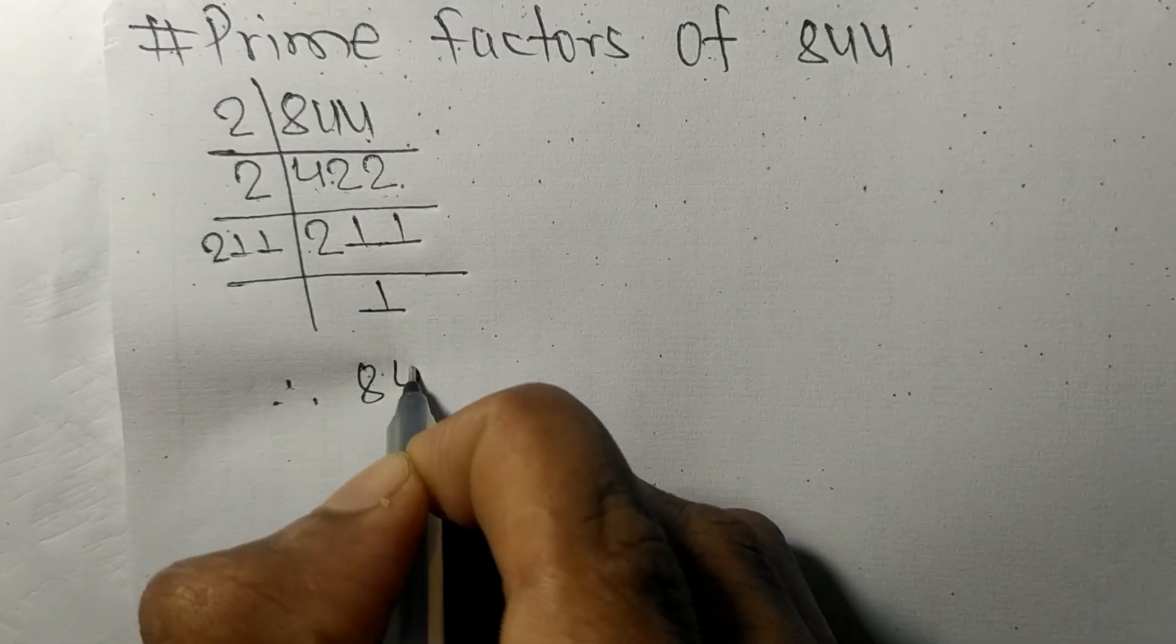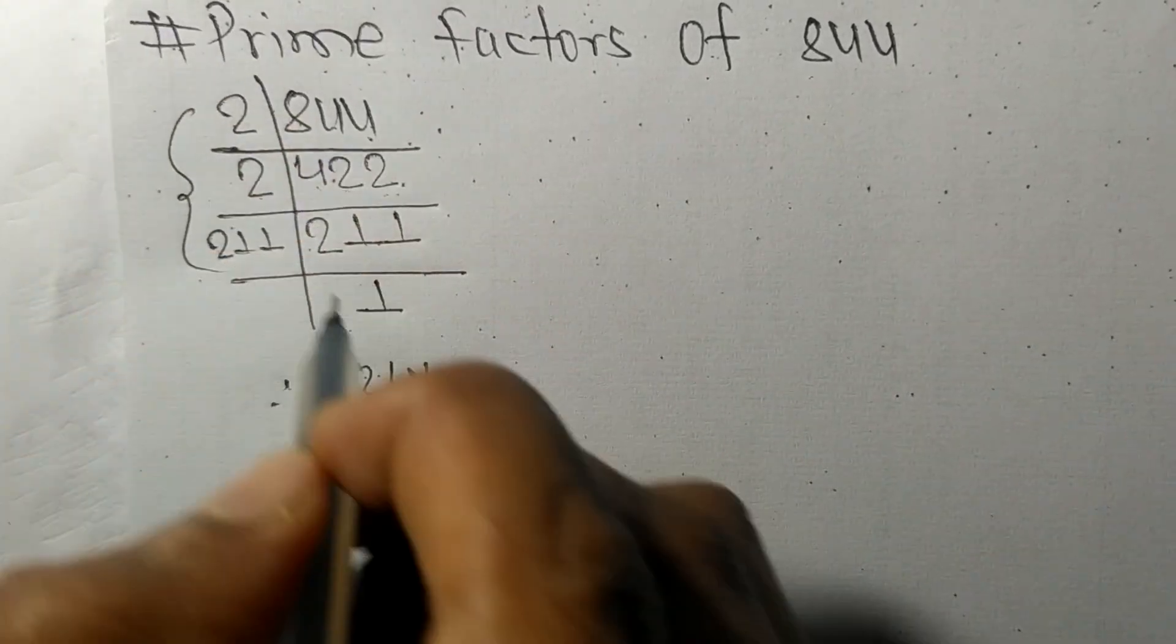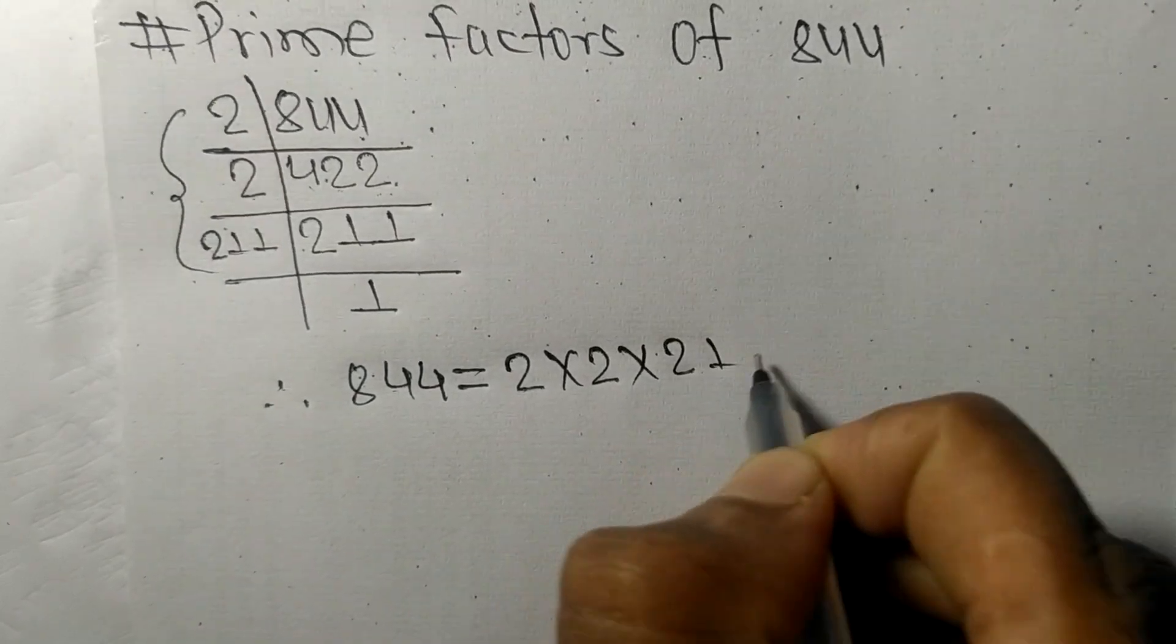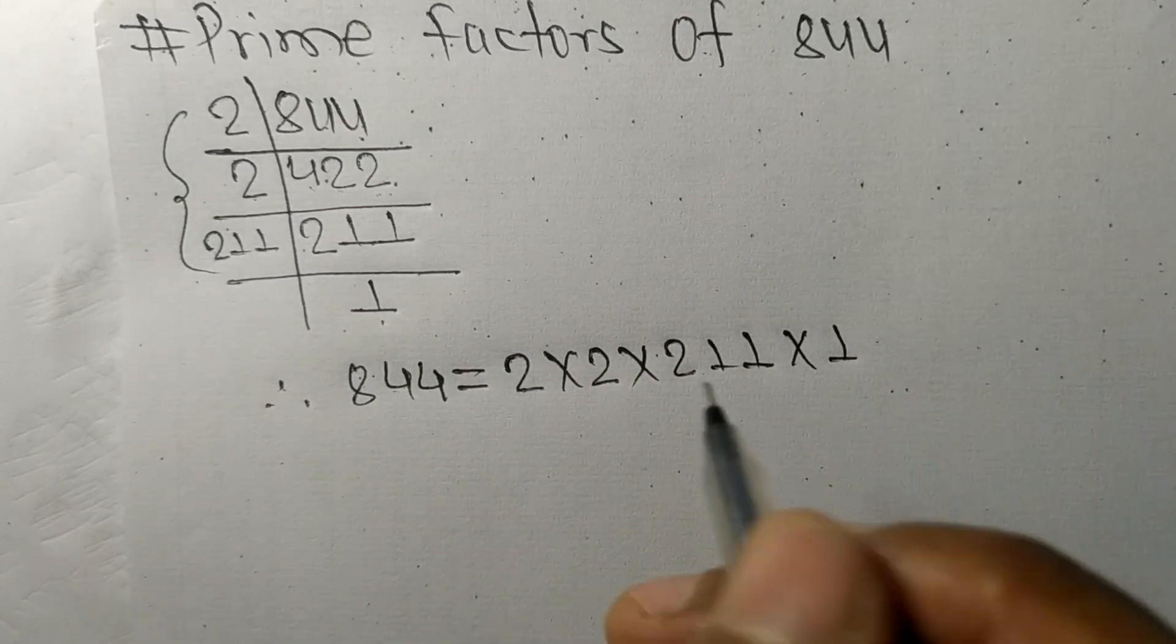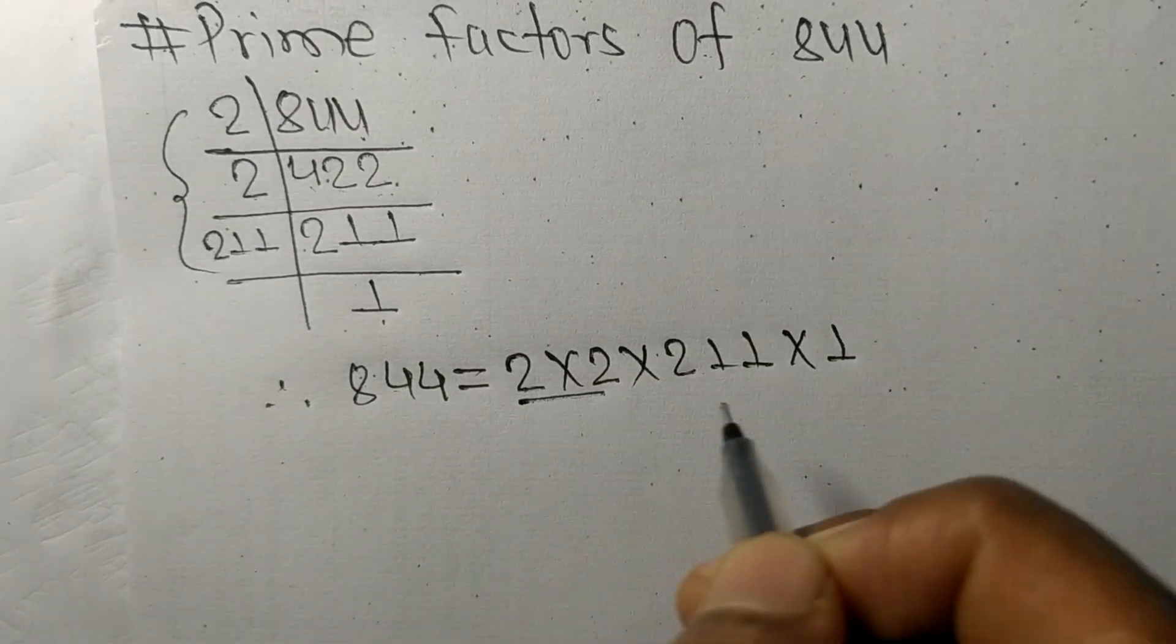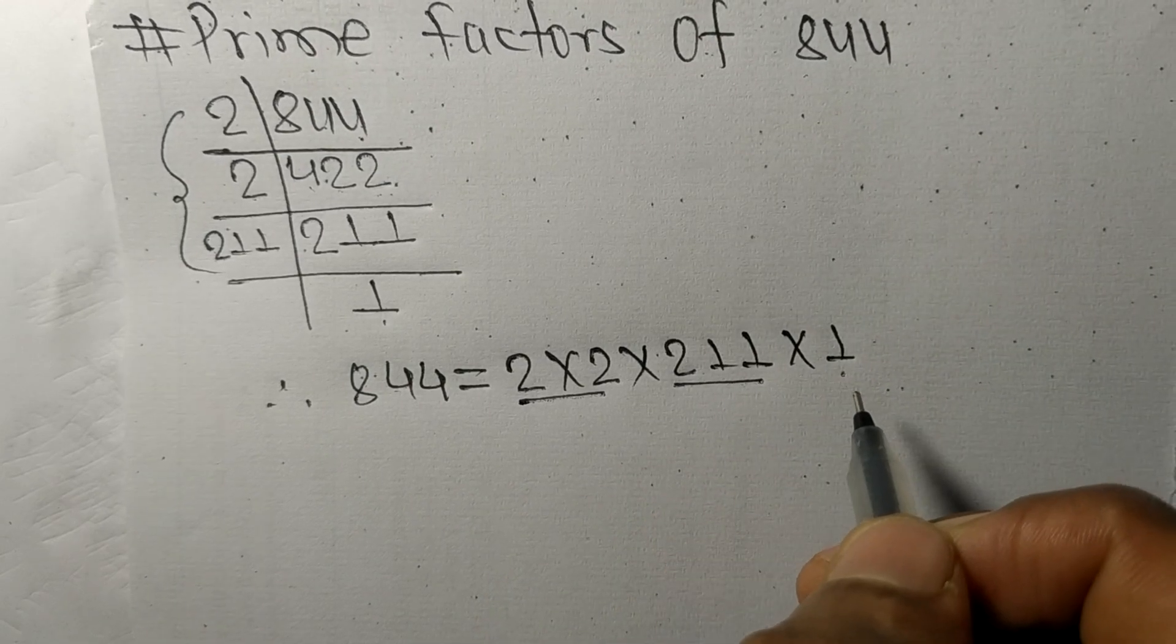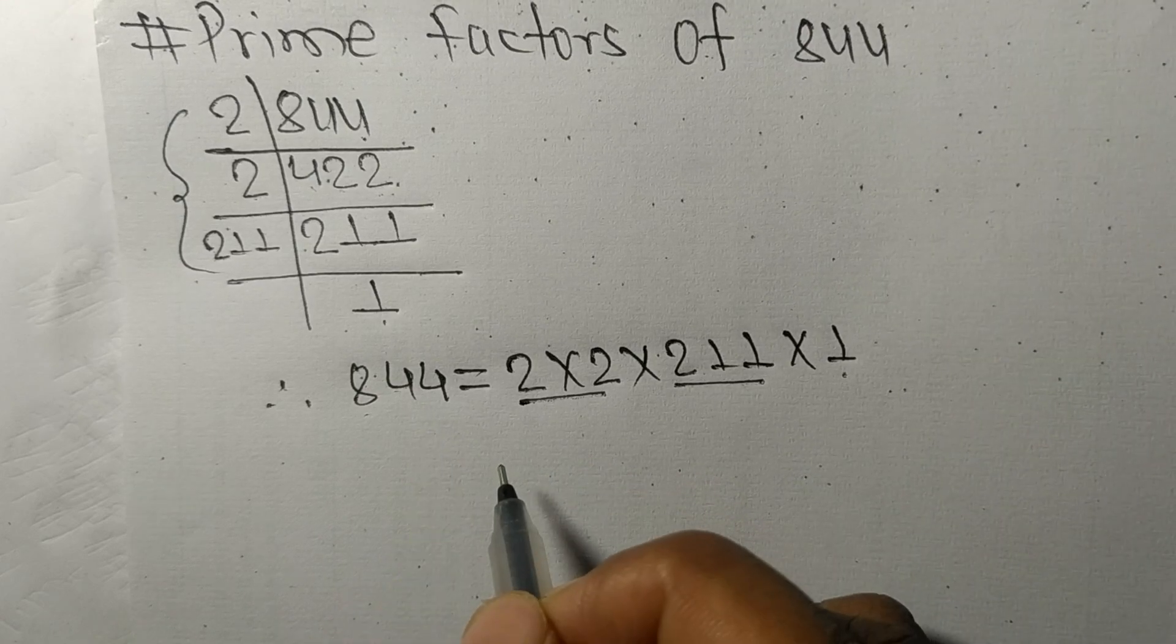Therefore 844 is equal to, from this side it is 2 times 2 times 211. So 2, 211, and 1 are the prime factors of 844.